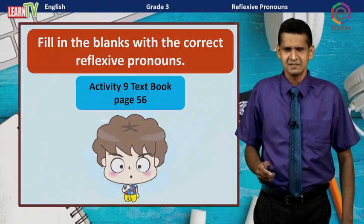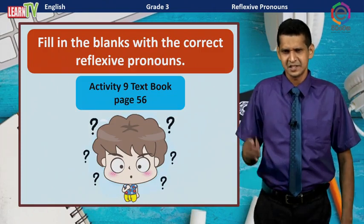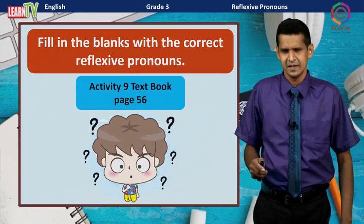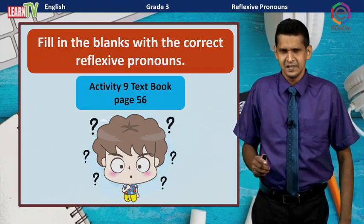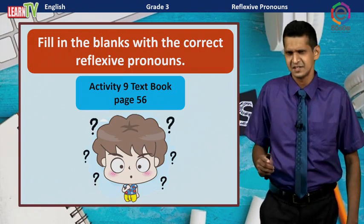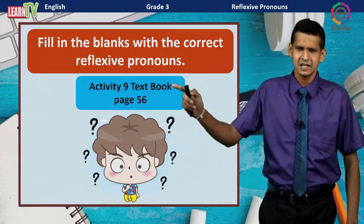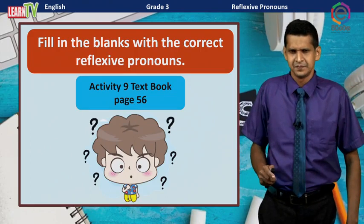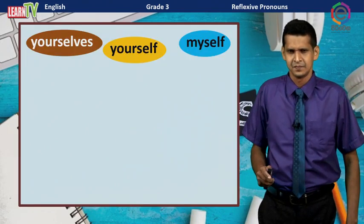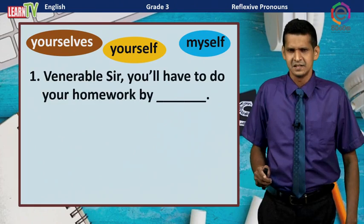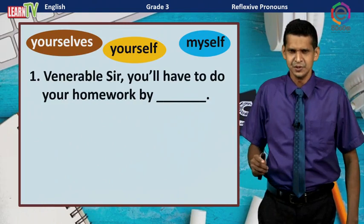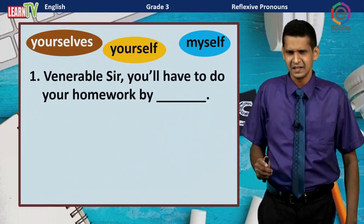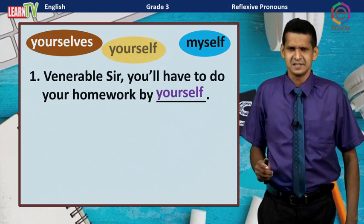The other activity is taken from your textbook. The activity number is 9, page number 56. Fill in the blanks with the correct reflexive pronouns. First question: You will have to do your homework by ___. The answer is 'yourself.'